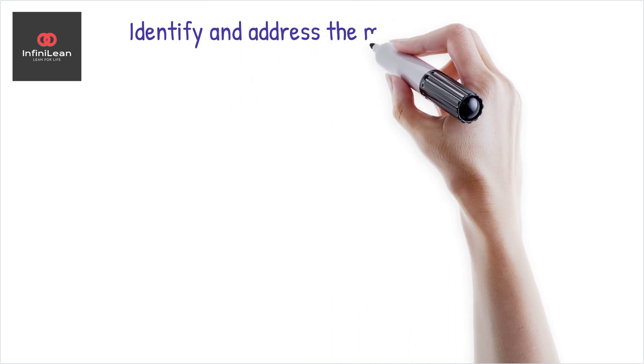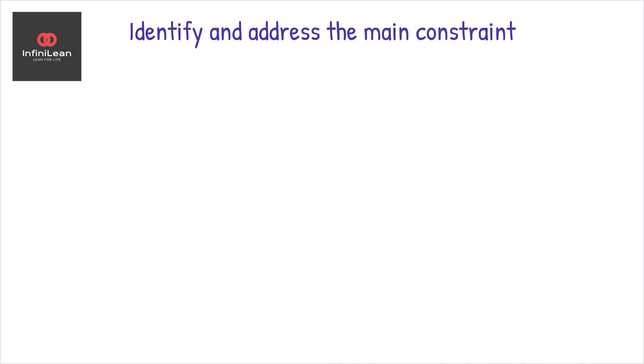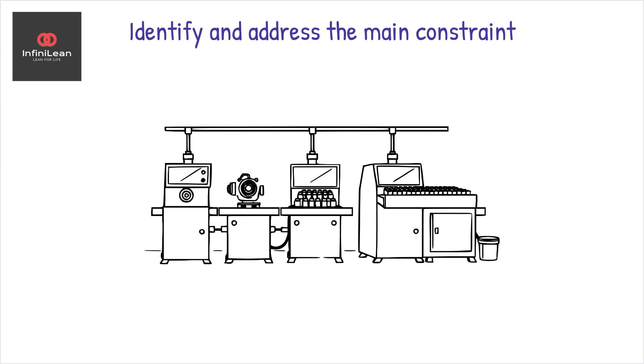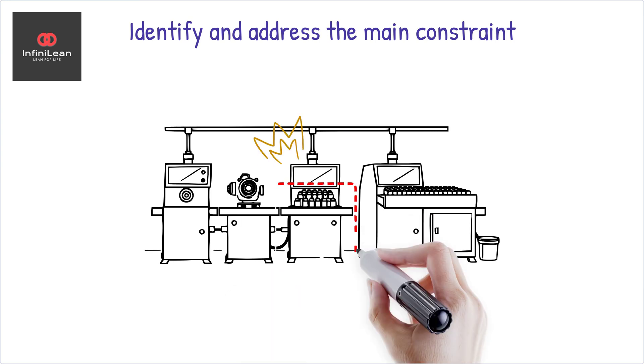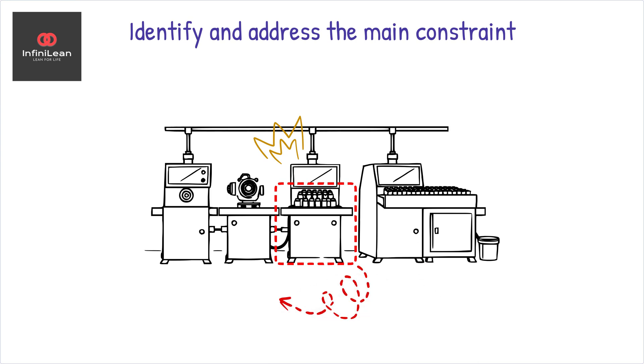The theory of constraints is based on a simple yet powerful premise. Every process within any system consists of interdependent tasks. Among these, a single constraint always limits the overall system's performance. Identifying and addressing this primary constraint is key to optimizing performance and achieving the organization's goals.